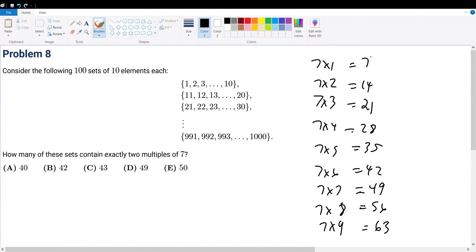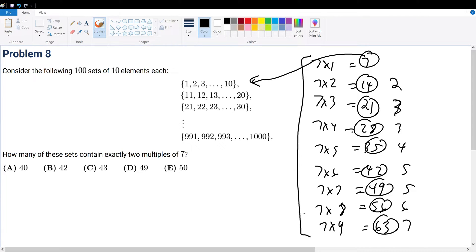Notice that there's a 7 in the first set, there's a 7 in the second set, in the third set, in the fourth set, in the fifth set, in the sixth set, in the seventh set. So every single set just from these few multiples of 7 should give you an inductive reasoning that every single one of these sets contains at least one multiple of 7.